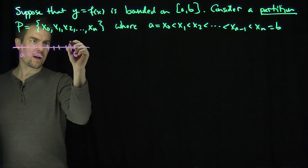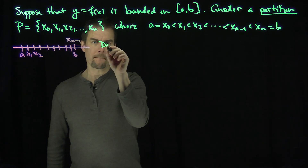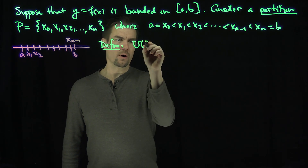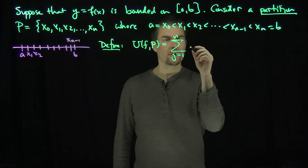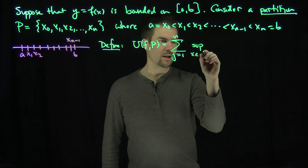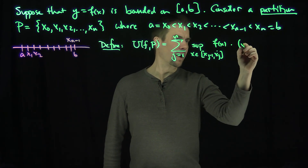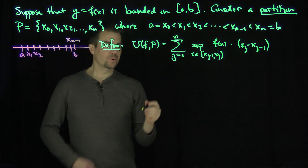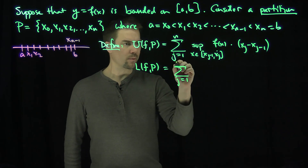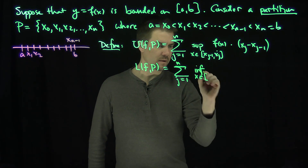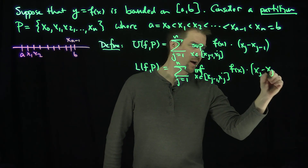We define U(f, P) to be the sum from j = 1 to n of the supremum over all x in [x_{j-1}, xj] of f(x), times (xj - x_{j-1}). Likewise, we define L(f, P) to be the sum from j = 1 to n of the infimum over x in [x_{j-1}, xj] of f(x), times (xj - x_{j-1}).